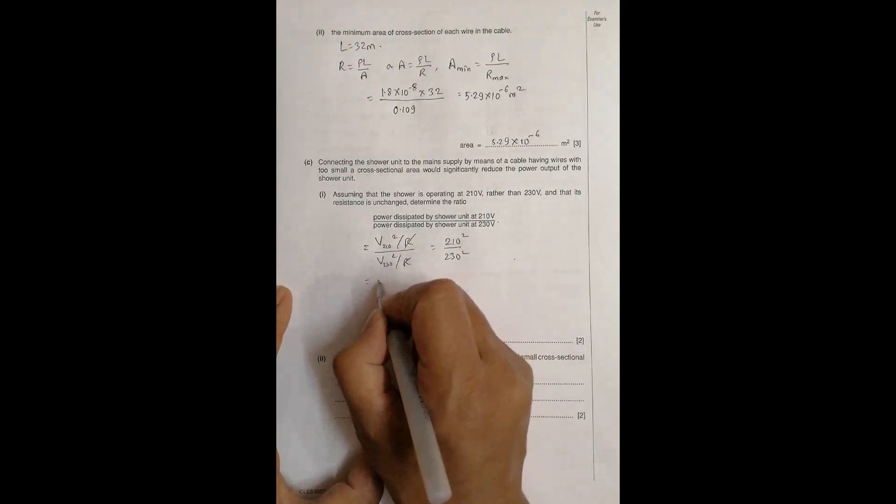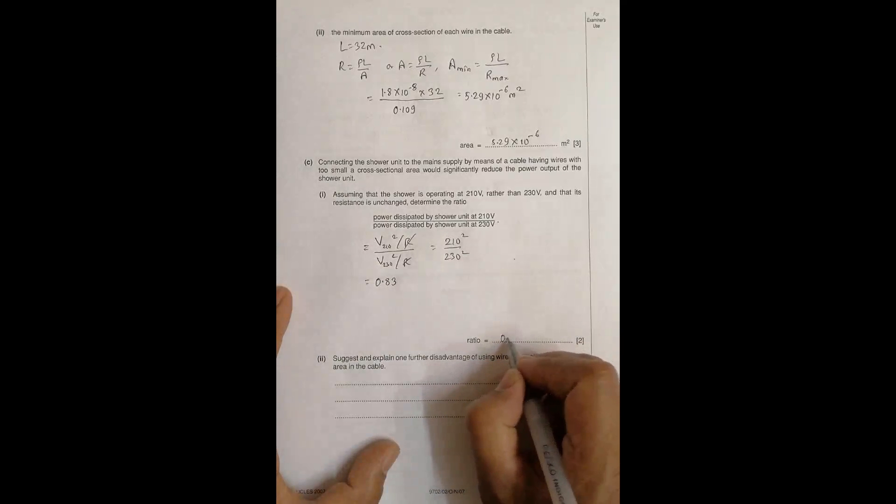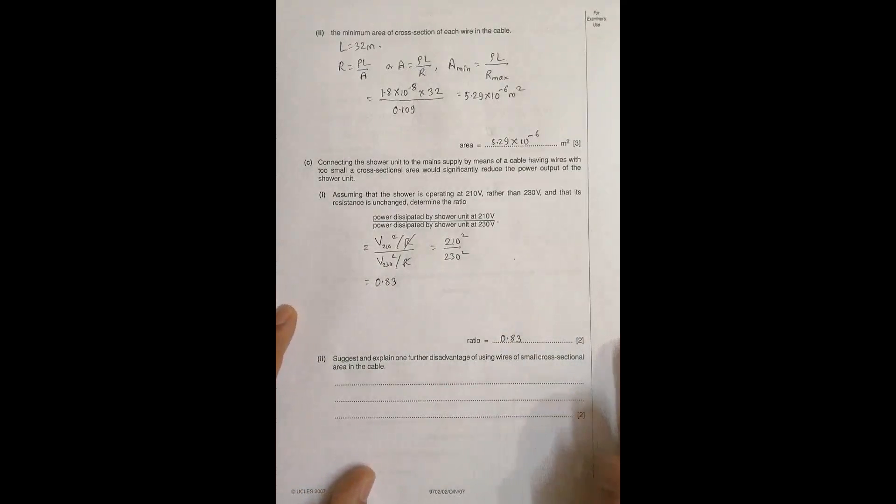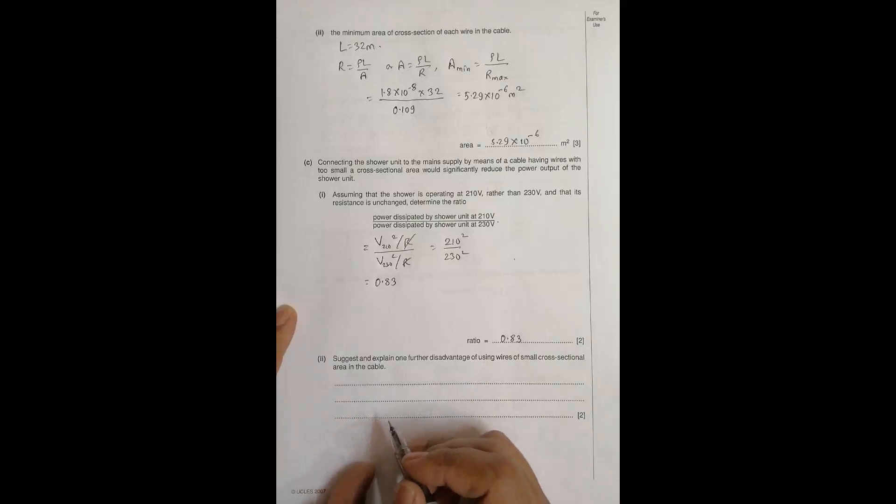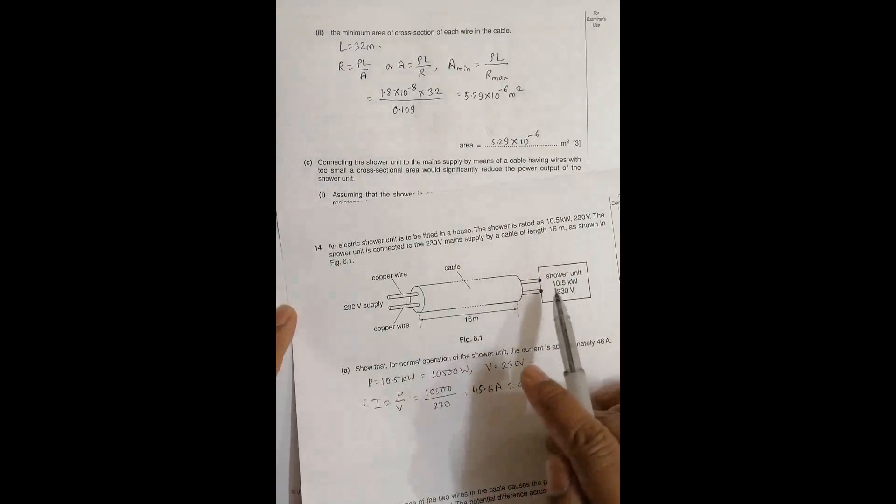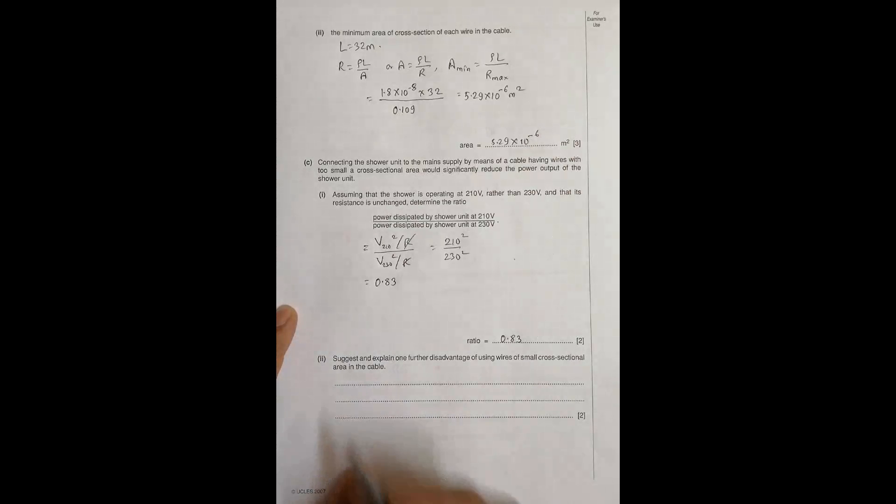Now suggest and explain one further disadvantage of using wires of small cross sectional area in the cable. The less power obtained is one disadvantage, so we have to go for another one.